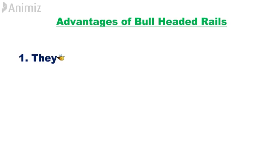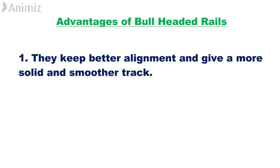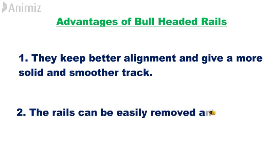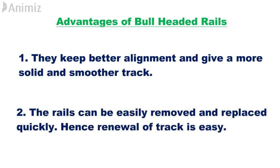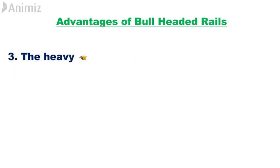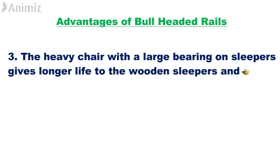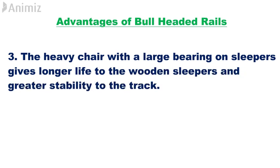Advantages of bull-headed rails: 1. They keep better alignment and give a more solid and smoother track. 2. The rails can be easily removed and replaced quickly, hence renewal of track is easy. 3. The heavy chair with a large bearing on sleepers gives longer life to the wooden sleepers and greater stability to the track.